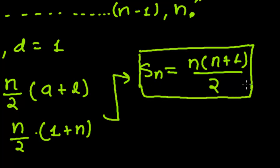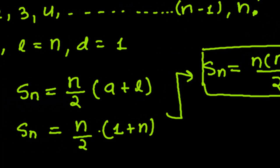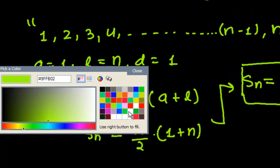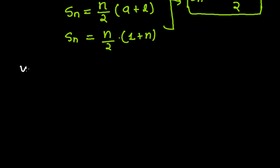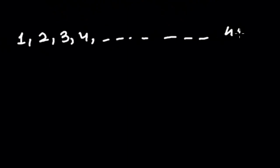So this is the formula for the sum of the first n natural numbers, or the sum of the first n positive integers. We'll be using this formula to easily find the sum of natural numbers. Let me give a small example: suppose we want the sum of the first 40 natural numbers, that is 1, 2, 3, 4, and so on up to 40.